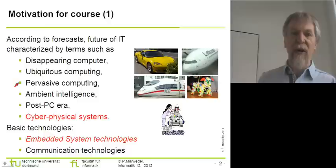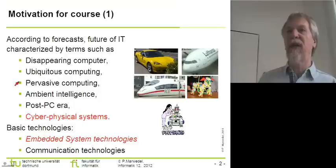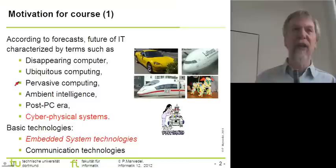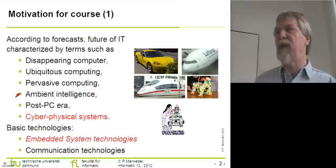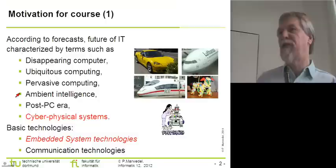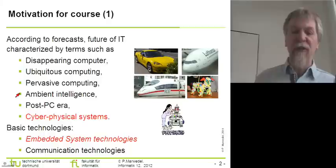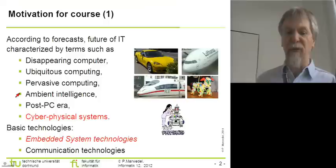Another buzzword is pervasive computing, which refers to the fact that computing will affect our day-to-day life. We have seen the impact of electronic media even on politics and on governments in certain countries as a result. Having computing available around us also means our environment becomes smart — a help to handicapped people, a help to elderly people. In this way, we are trying to achieve ambient intelligence, meaning intelligence will be around us.